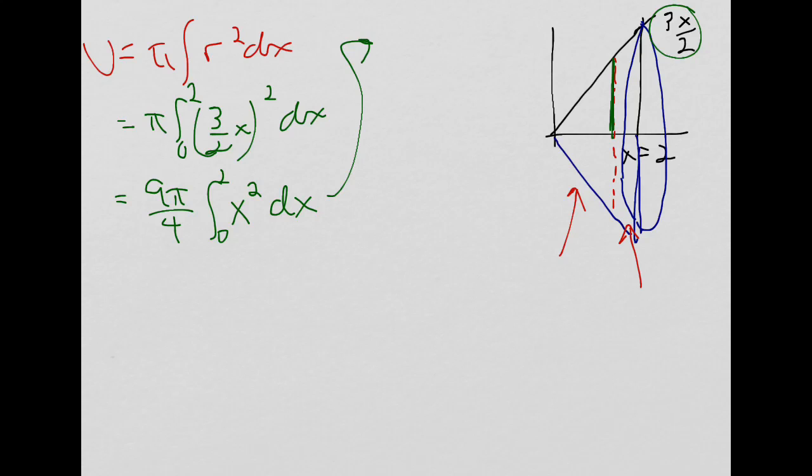So I'm going from 0 to 2. That gives me 9 pi over 4 times 1 third x cubed evaluated from 0 to 2, which is going to evaluate out to 3 pi over 4. I cancelled this with this and was left with a 3 times 2 cubed, plug in 2 there, and then when I do the minus 0 it goes away, which is going to simplify out to be 6 pi, which is nice.